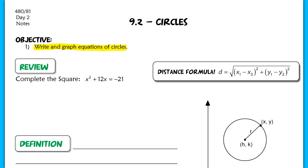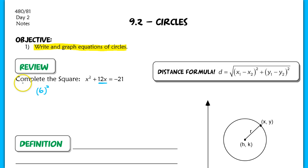In this example, we have x squared plus 12x equals negative 21. Most of you are going to want to move that negative 21 to the other side, but you don't. You keep it exactly where it's at. What we're going to do is cut this middle term in half. If we cut that in half, we would end up with 6, and then we square that value. So we're turning that into x squared plus 12x plus 36.